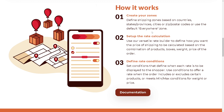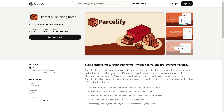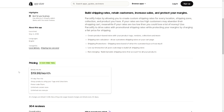To get started with Parcelify, you need to create your zones by defining shipping zones based on countries, states, provinces, cities, or zip/postal codes, or use the default everywhere zone. Then set up rate calculation using the versatile rate builder to define how shipping price is calculated based on a combination of products, boxes, weight, and price on the order. You can also define rate conditions that specify when each rate is displayed to the shopper. To install, click the button for a 14-day free trial at $19 per month, which includes postal code filters, unlimited custom rates, and unlimited rate lookups. There are 300-plus reviews to help you decide if Parcelify is the right app for you.